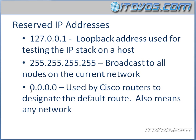The next IP address is 0.0.0.0, and this is used by Cisco routers to designate the default route. We'll see this a little bit later on, but it also means any network.